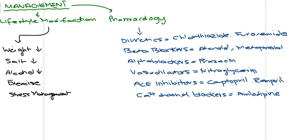When lifestyle modification is insufficient, pharmacological therapy is used. Diuretics such as chlorothiazide and furosemide increase excretion of water from the kidneys, decreasing blood pressure. Beta blockers such as atenolol and metoprolol decrease heart rate and contractility. Alpha blockers such as prazosin also decrease blood pressure. Vasodilators such as nitroglycerin and sodium nitroprusside increase arterial diameter, causing vasodilation and decreasing blood pressure.